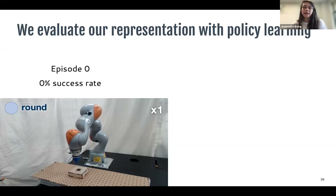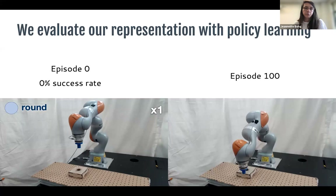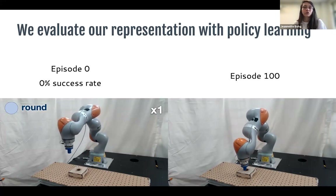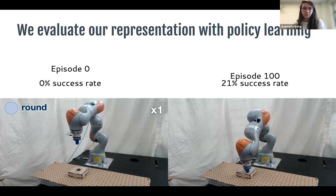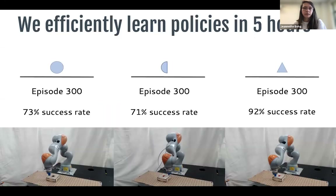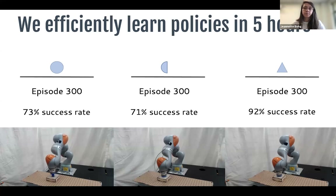We evaluate how well our representation captures the multimodal state by measuring policy learning efficiency. At episode zero, the robot barely touches the box. After 1.5 hours it makes contact and searches near the hole, but without perfect alignment has only 21% success. After 5 hours of real-robot training, we learn a robust insertion policy — much more sample-efficient than end-to-end deep RL, which might take days. We show results across different peg geometries with success rates from 71% to 92%.